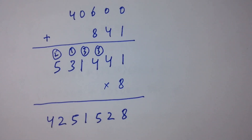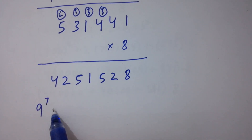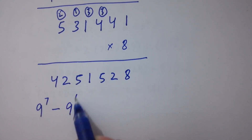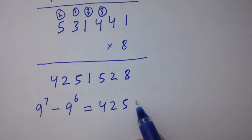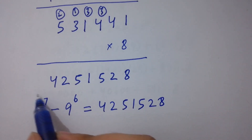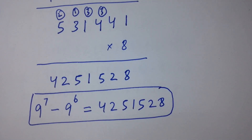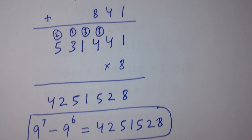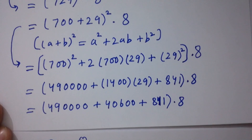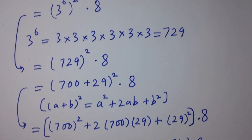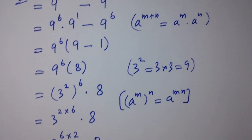So, 9 to the power 7 minus 9 to the power 6 equals 4,251,528. Finally, I solved this without any calculator. Thanks for watching this video. Please subscribe to this channel to get notifications of my new videos, and don't forget to share these videos with your classmates and friends.